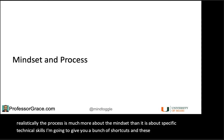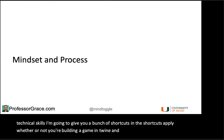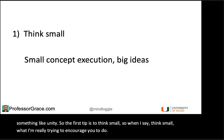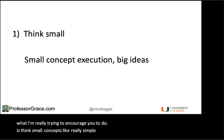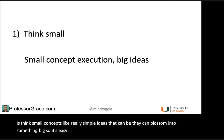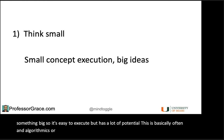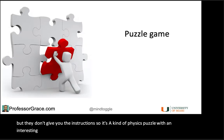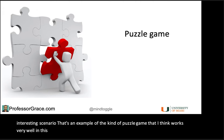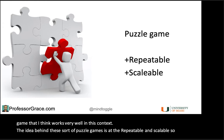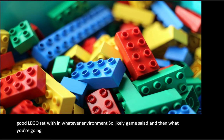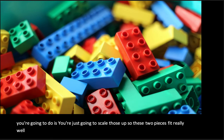I'm going to give you a bunch of shortcuts, and these apply whether you're building a game in Twine or all the way up to something like Unity. The first tip is to think small — really simple ideas that can blossom into something big. It's easy to execute but has a lot of potential. This is basically often an algorithmic or puzzle game. Home Improvisation is a game jam game — a really simple concept where they give you things to put together but don't give you the instructions. It's a kind of physics puzzle with an interesting scenario. The idea behind these puzzle games is that they're repeatable and scalable. Think of them as Legos — you build a good Lego set within your environment, then you just scale those up. These two pieces fit really well together, you repeat them over and over and make a full game out of it.